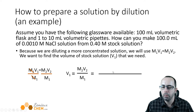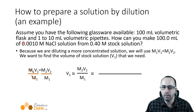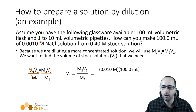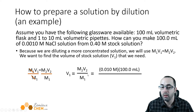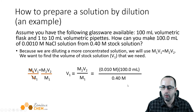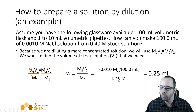Now we're going to plug in our molarities and volumes. The 2 refers to the diluted solution. Our molarity M2 is 0.010 molar, and the volume we want to make is 100 milliliters. Our stock solution molarity M1 is 0.4 molar. The molarities cancel and we get milliliters. What we get is 0.25 milliliters.